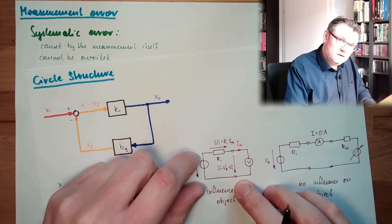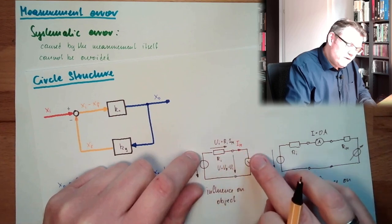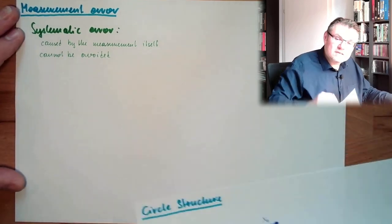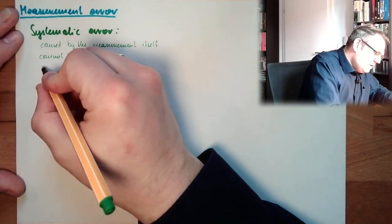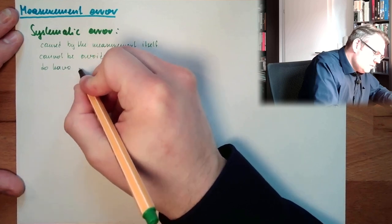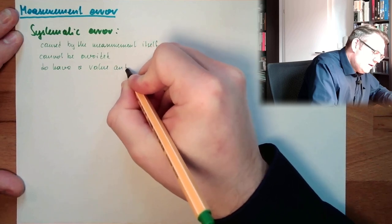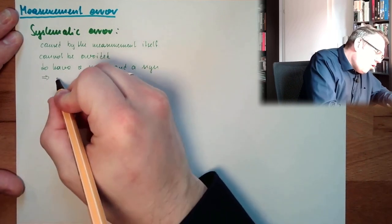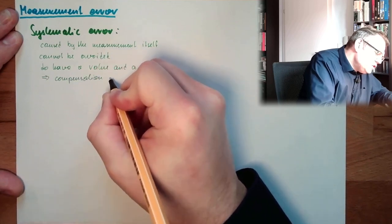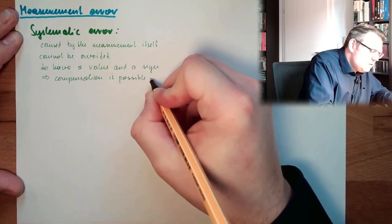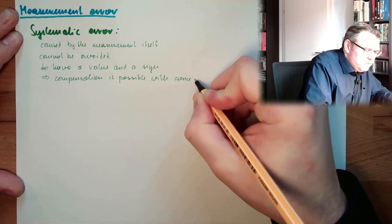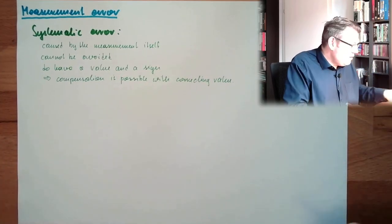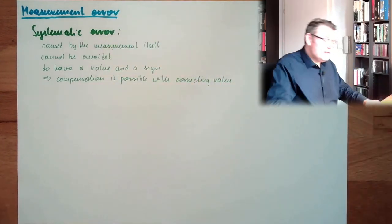However, the good thing is: if you know how much the internal resistance is and how much the measurement voltage drain is, then you can compensate this. Systematic errors do have a fixed value and a fixed sign — they are plus or minus. So compensation is possible with a correcting value. This correcting value has the same value but opposite sign, and then you can completely compensate such systematic errors.